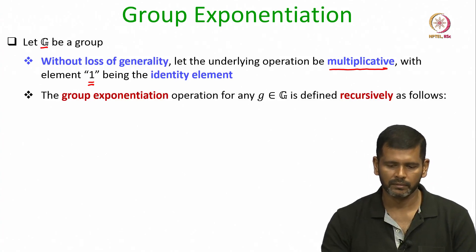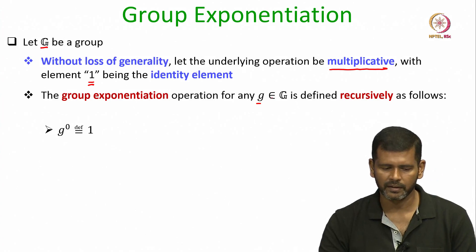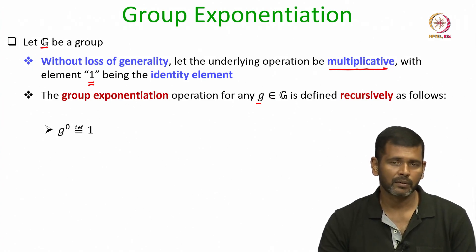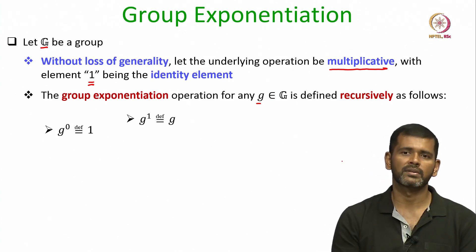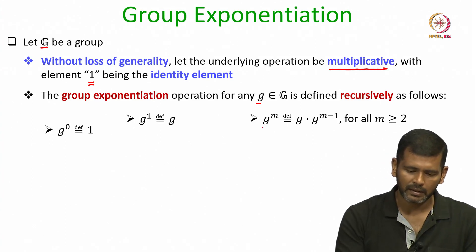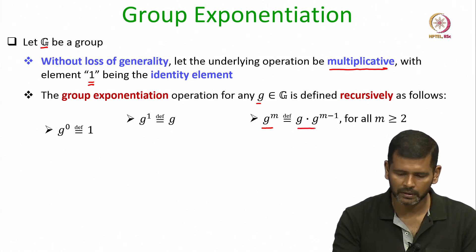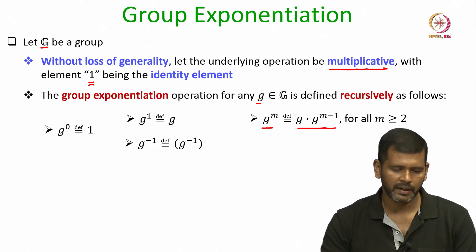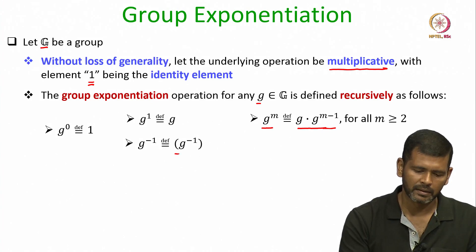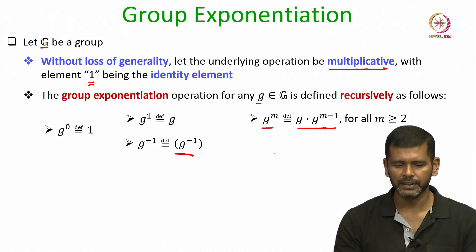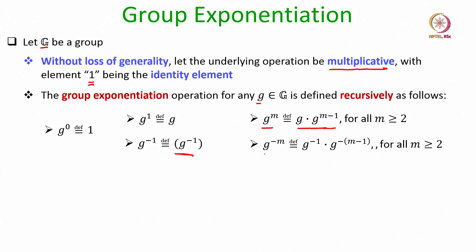The group exponentiation operation for an element g is defined recursively as follows: g to the power 0 is the identity element of the group; g to the power 1 is the group element g itself; g to the power m for any m ≥ 2 is the result of the group operation performed over g to the power m−1 and g. And g to the power −m for any m ≥ 2 is defined using g to the power −1 and g to the power −(m−1).